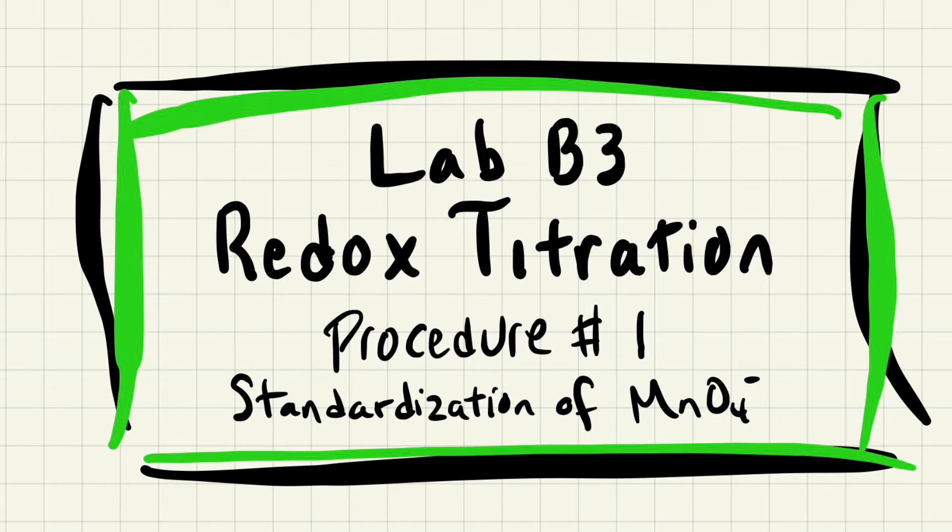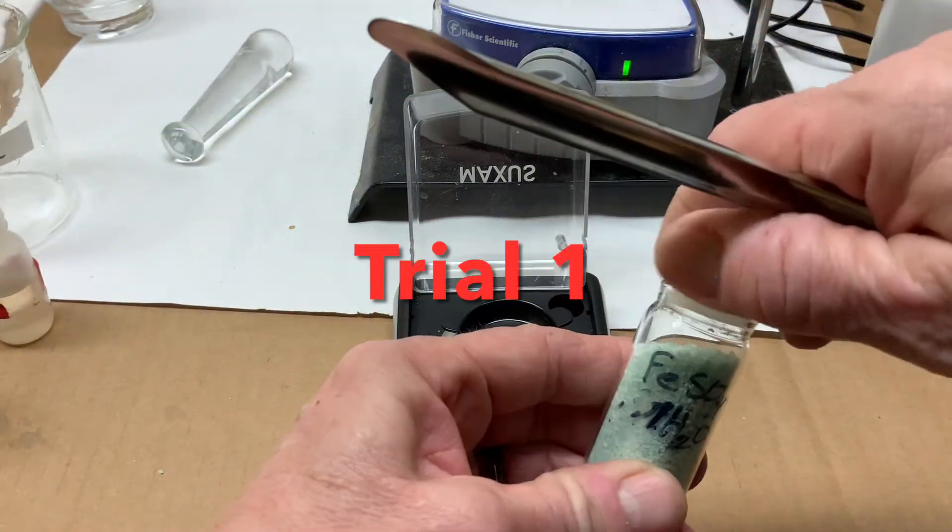Procedure 1 of lab B3, the redox titration: standardization of the potassium permanganate.